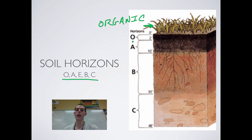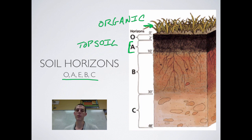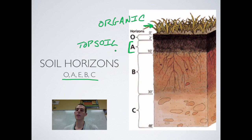From the O horizon, you get down into the A horizon, known as the topsoil. The topsoil is where the organic material has been mixed with some of the sediment, and this is the place where you grow stuff. When we talk about fertility, we're basically talking about how much topsoil is present. If you've got a lot of topsoil, that means you've had a lot of organic material die and get mixed in with sediment. If you've got less topsoil, it's not going to be an area good for growing because you lack either the sediment or the organic material needed.